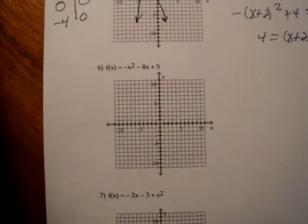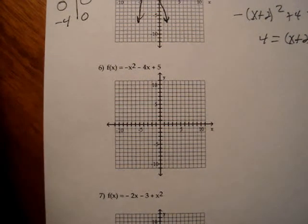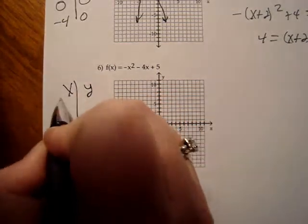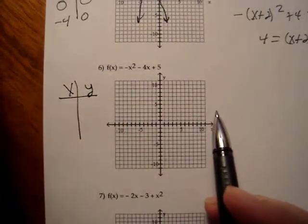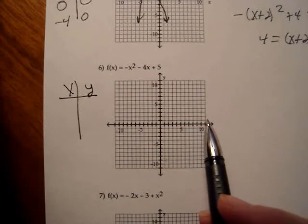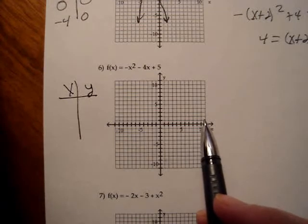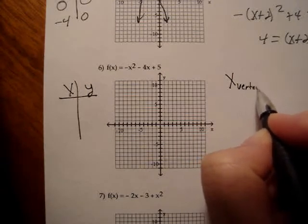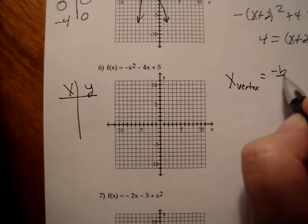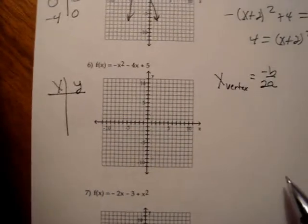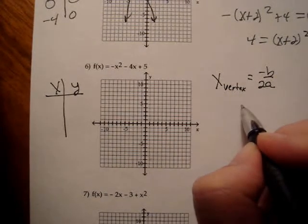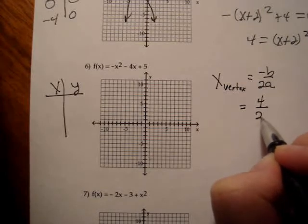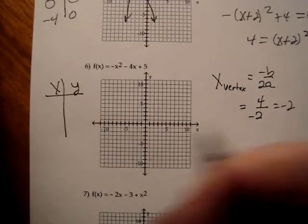Now let's do number 6. Number 6, this time to find my vertex, this is not in standard form, I can't just read the vertex off. I have to use the cool little formula where the x-coordinate of the vertex is negative b over 2a. And so if I do the math on that, I get positive 4 over negative 2, so x is negative 2.